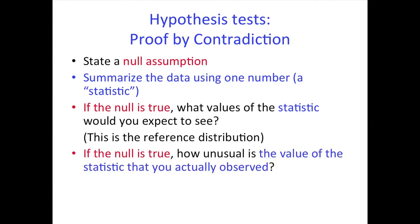If the null is true, how unusual is the value of the statistic that we actually observed? In other words, how surprised are we that she perhaps got three of them right? That's the p-value: the probability we'd see data at least as extreme as actually observed, if the null hypothesis were true.